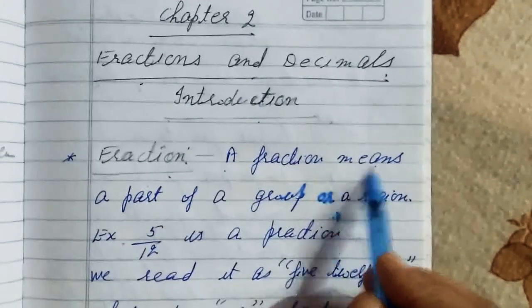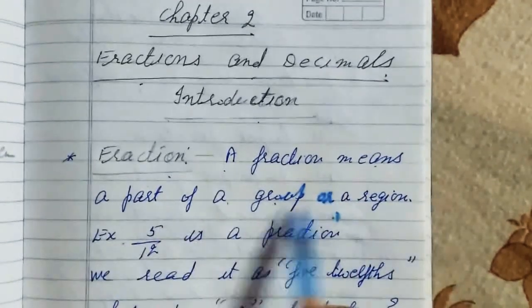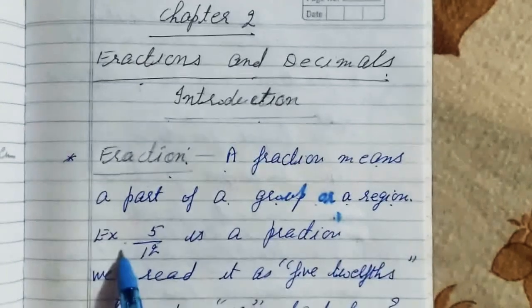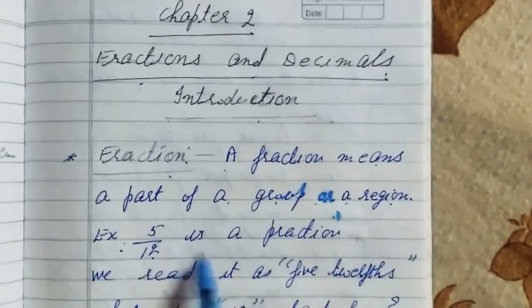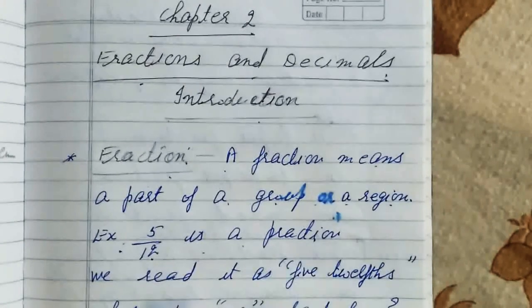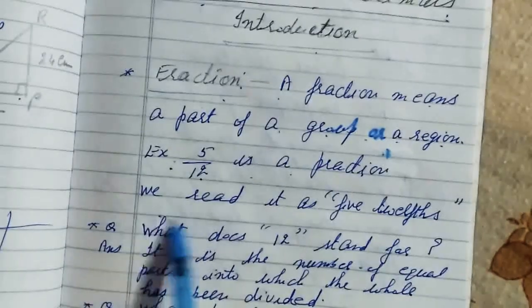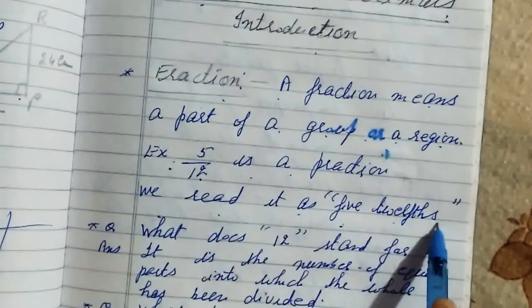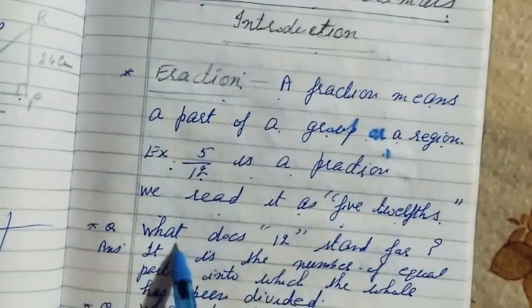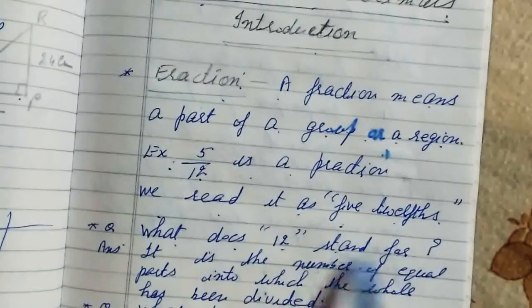A fraction means a part of a group or a region. Example: five of twelve as a fraction. We read it as five twelfths. What does twelve stand for?